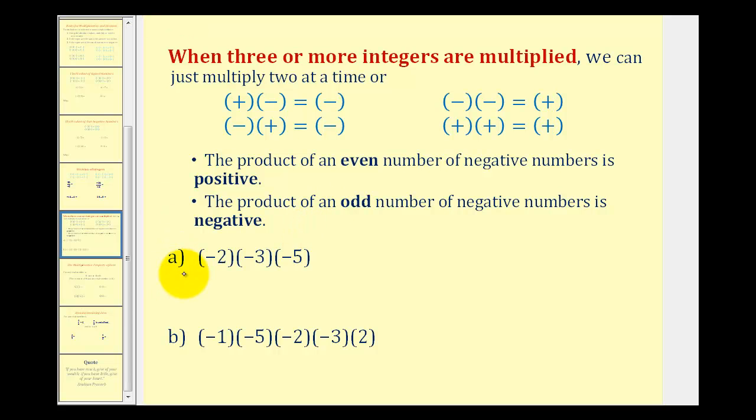So looking at our first example, notice we have one, two, three negatives involved in a product, and since three is an odd number, this product will be negative.